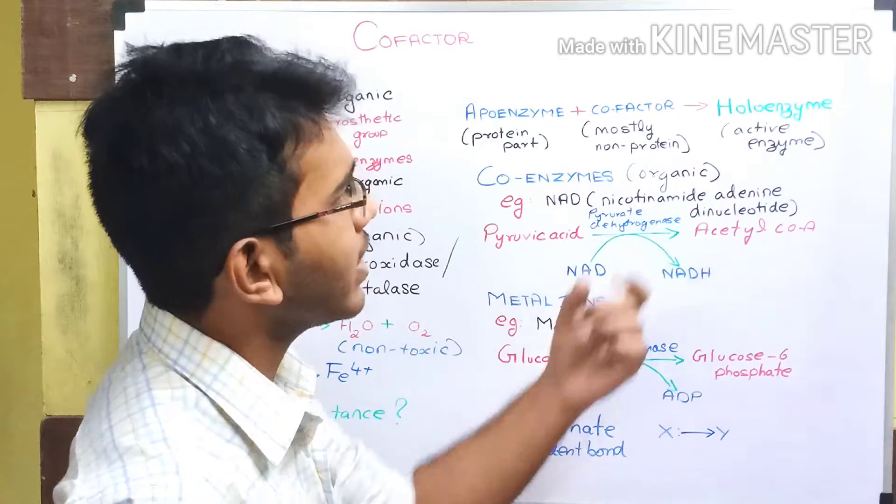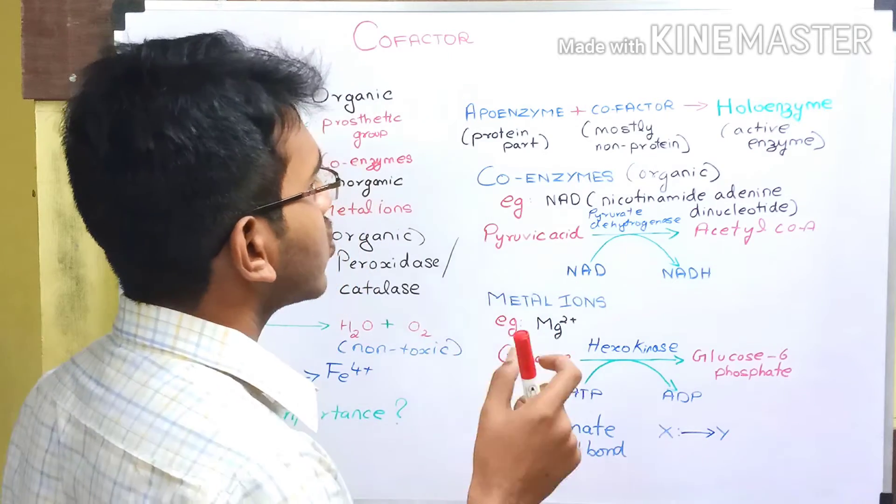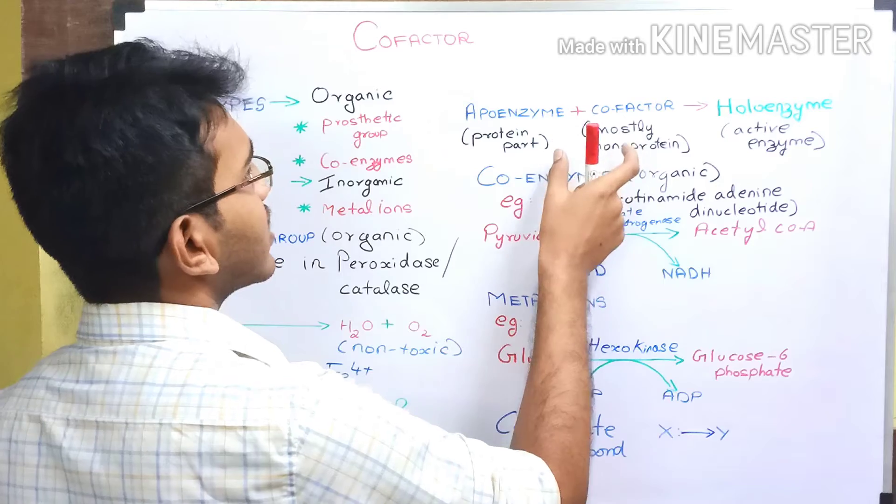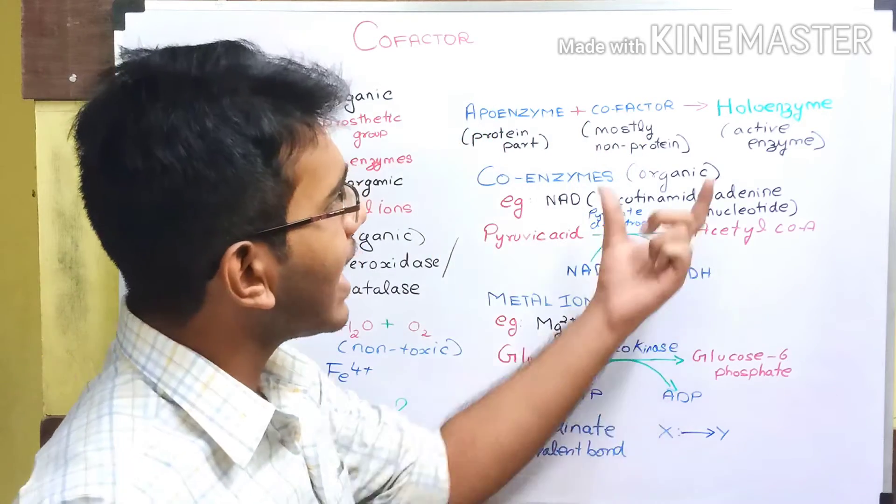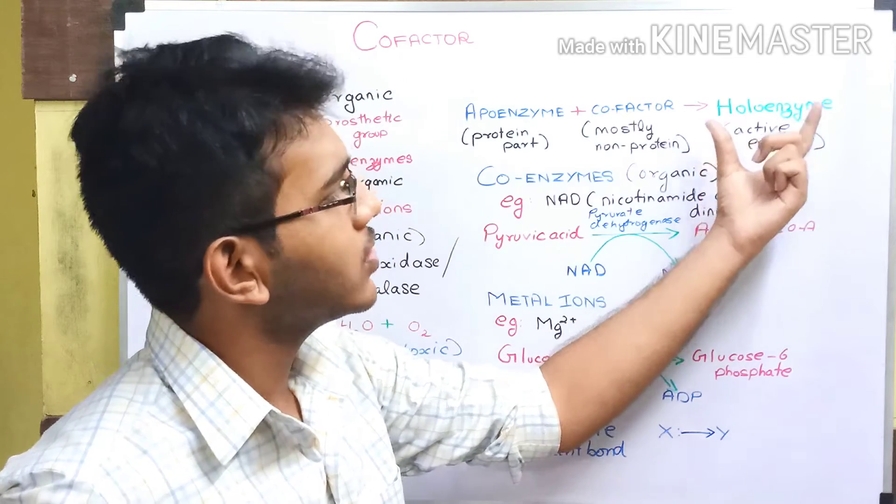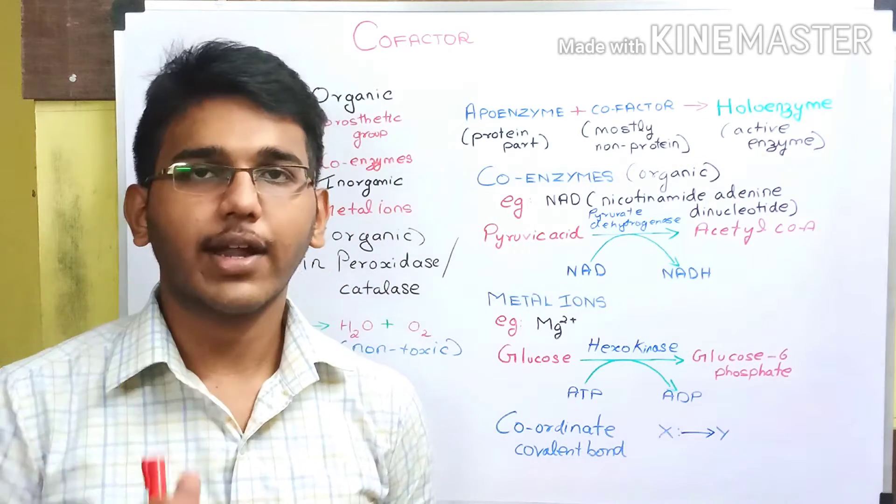This holoenzyme is an active enzyme. So whenever a cofactor combines with the inactive protein part of the enzyme, it produces an active enzyme called a holoenzyme. So now we are clear with what is a cofactor.